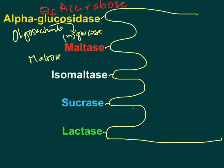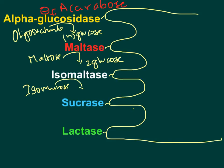Maltase enzyme acts on maltose, which is a disaccharide with two glucose units linked by an alpha 1,4 bond. Maltase breaks that alpha 1,4 bond and releases two glucose molecules. Isomaltase enzyme acts on isomaltose and breaks the alpha 1,6 linkage to release two glucose units. The key difference: maltase breaks alpha 1,4 bonds of maltose, while isomaltase breaks alpha 1,6 bonds of isomaltose.